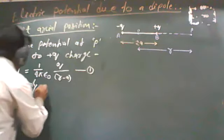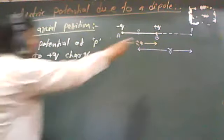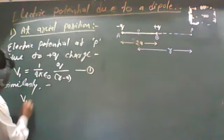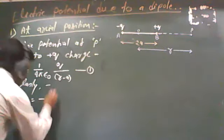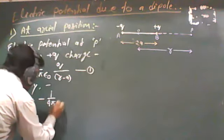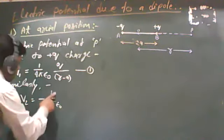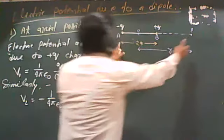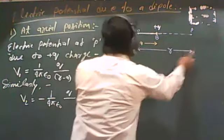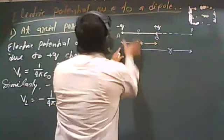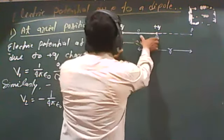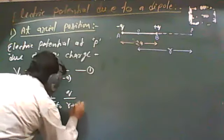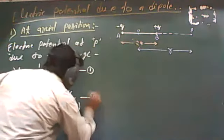Similarly, the electric potential at P due to the minus Q charge: since it is a negative charge, the potential will be negative. V2 is equal to minus 1 upon 4 pi epsilon naught, Q divided by the distance R plus A. This is equation number two.